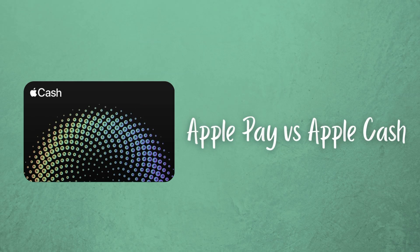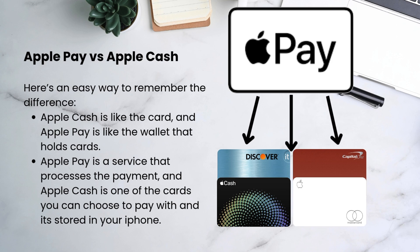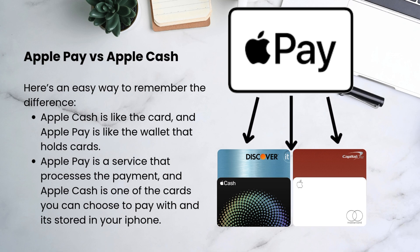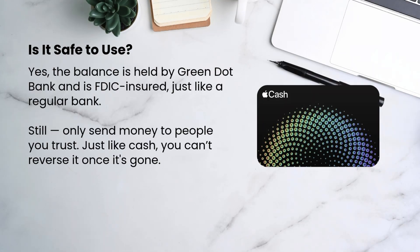Apple Cash and Apple Pay — how do you know the difference? Apple Cash is like the card, and Apple Pay is like the wallet that holds the cards. Apple Pay is a service that processes the payment, and Apple Cash is one of the cards you can choose to pay with, stored on your iPhone. Is it safe to use? Yes — the balance is held by Green Dot Bank and is FDIC insured just like a regular bank. But you should still only send money to people you trust, because just like cash, you can't get it back once it's gone. Apple Cash is also protected by Face ID, Touch ID, or your passcode — that's a good layer of security.